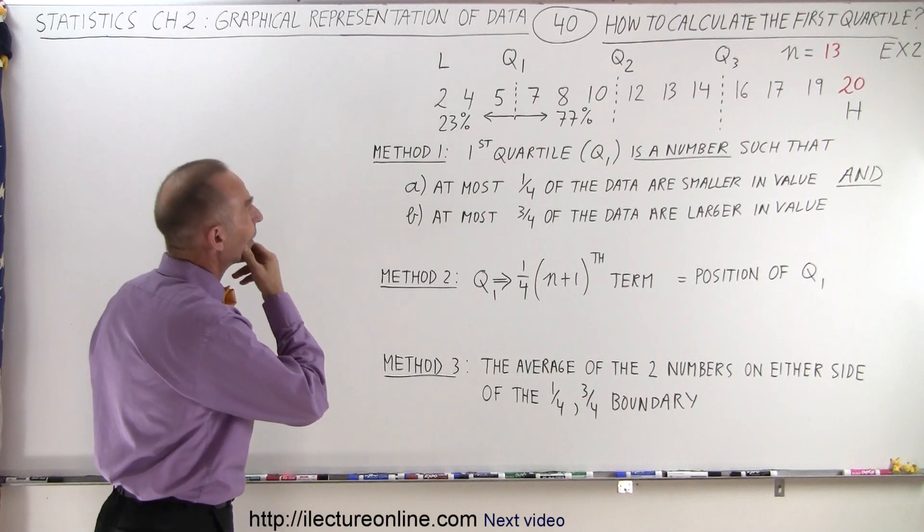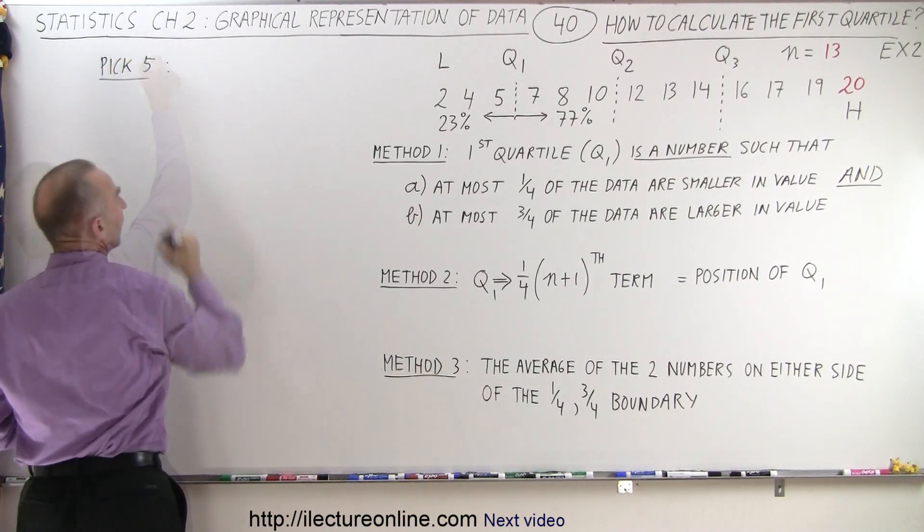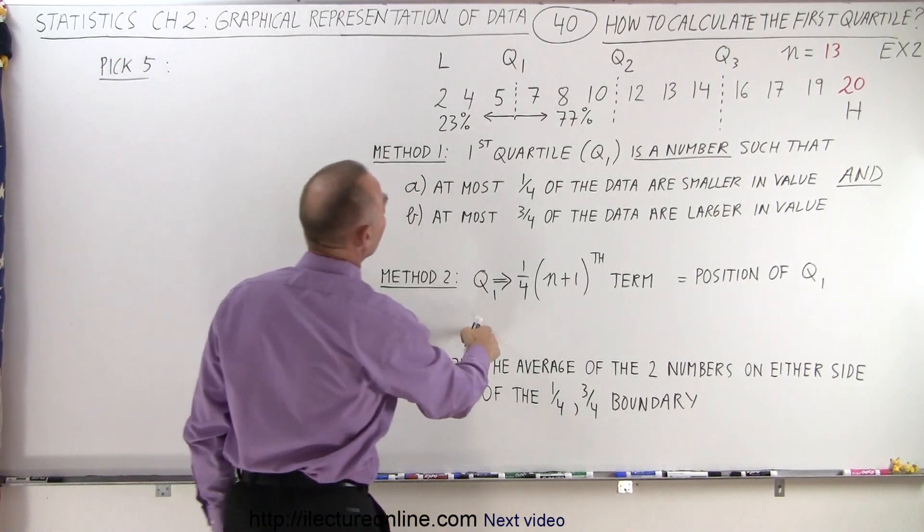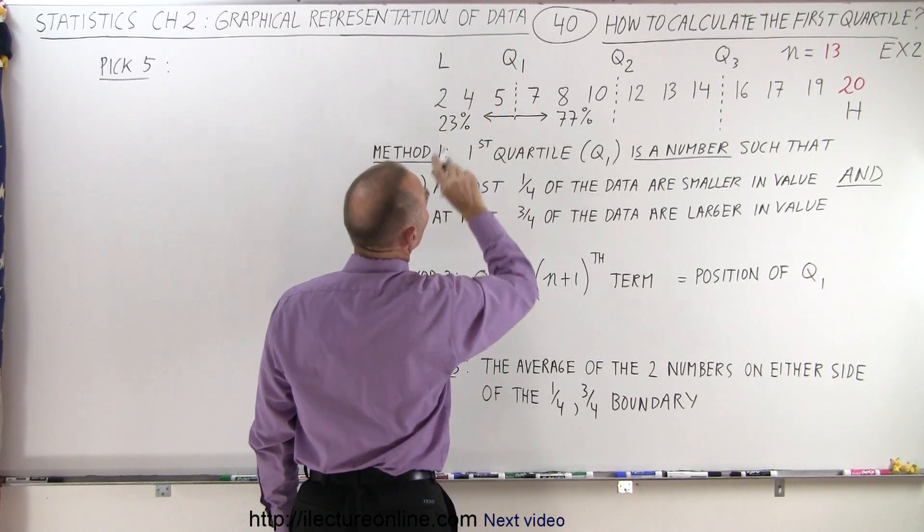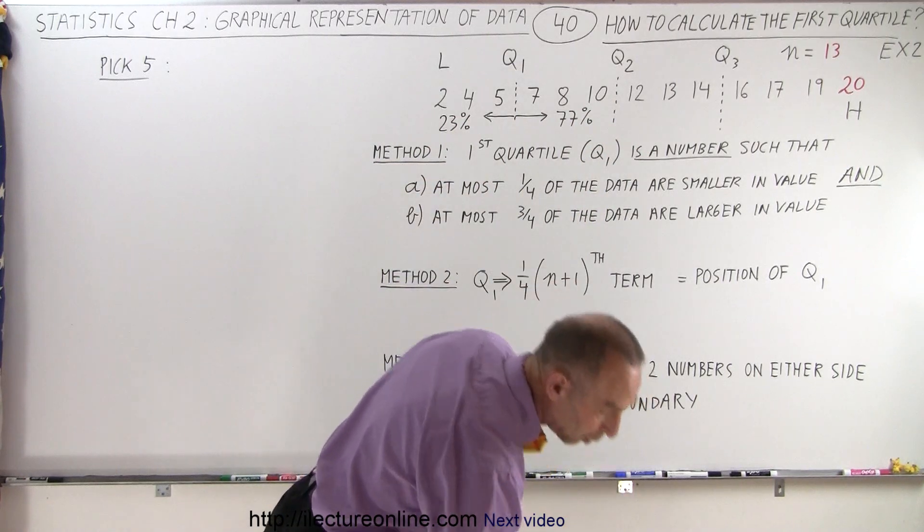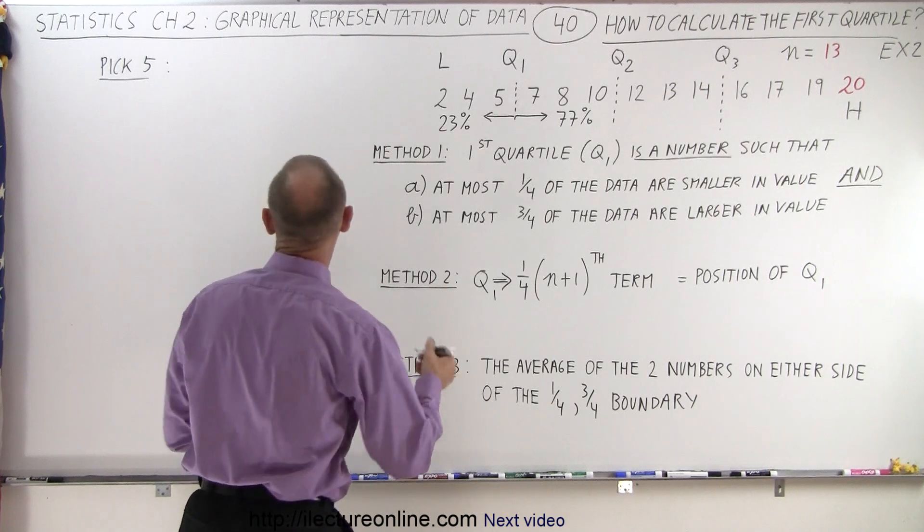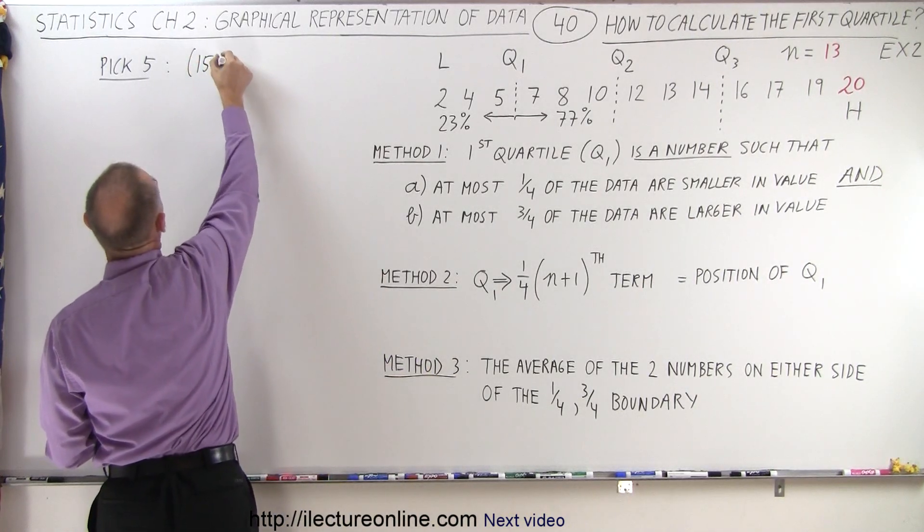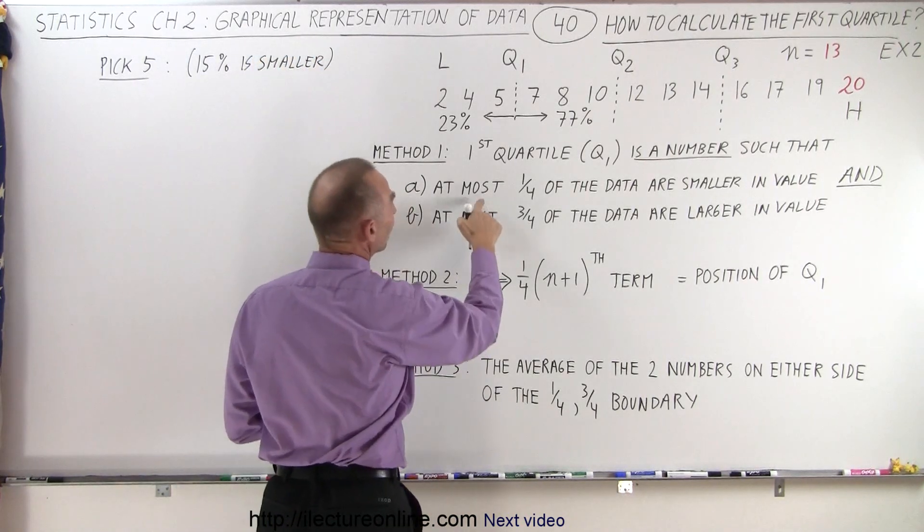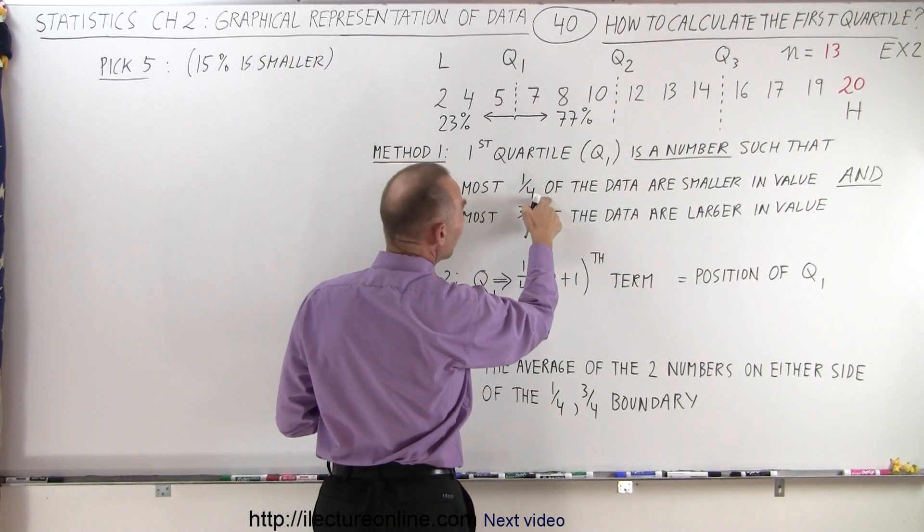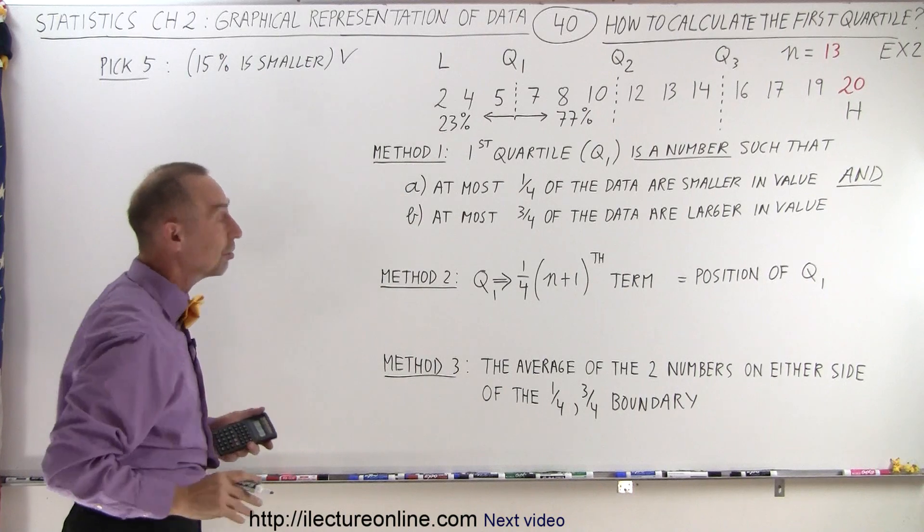Let's see here. If we pick 5, condition number one: we would have 2 out of 13 that are smaller, so 2 divided by 13 that are smaller, which is 15%. That means that 15% is smaller, and notice at most a quarter which is 25% must be smaller, so it meets that condition. When we pick 5, at least it meets the first of the two conditions.